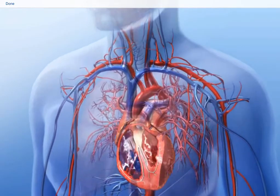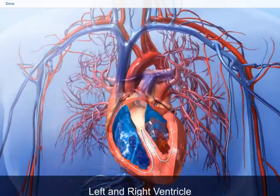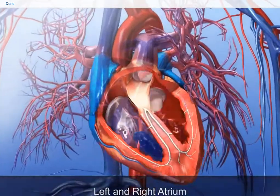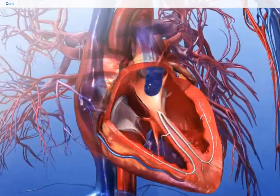The heart has four hollow chambers, the left and right ventricle and the left and right atrium. Each chamber has a different function.